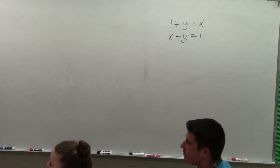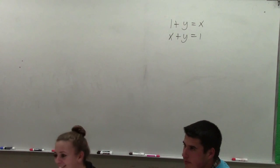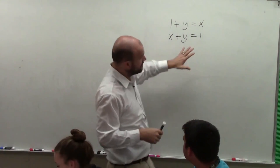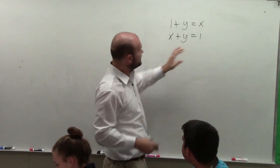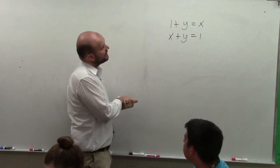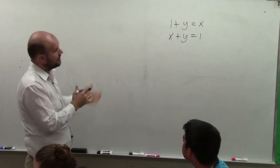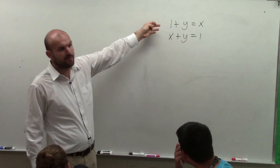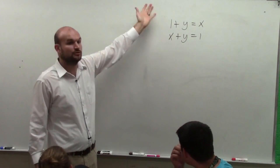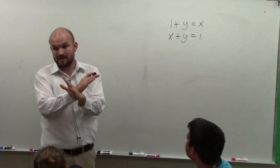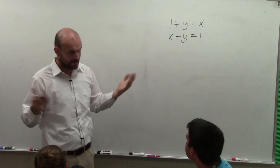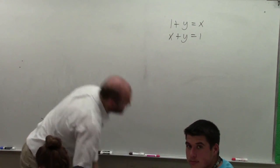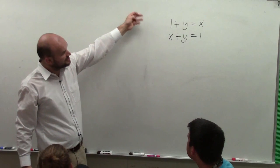There are two different cases that we're going to go over. First one we're going to go over is substitution and then the second one we're going to talk about is elimination. Now when going through this with substitution, we could previously solve this by graphing — where you graph each one, find where they intersect, and that was your solution. Now we're going to learn the algebra method, and the first way is substitution.